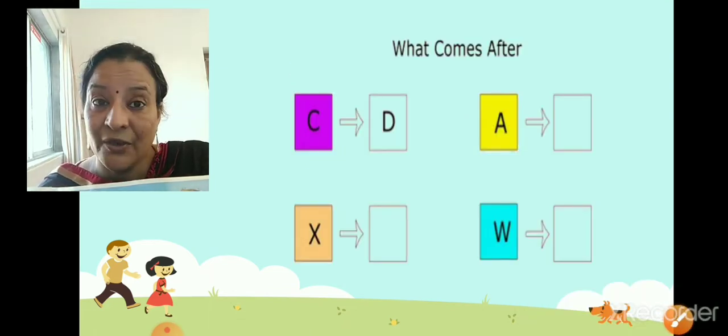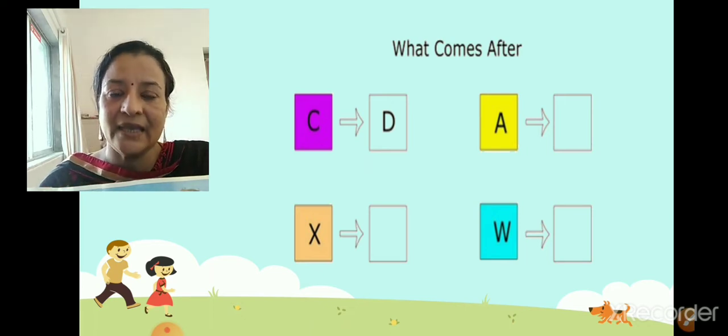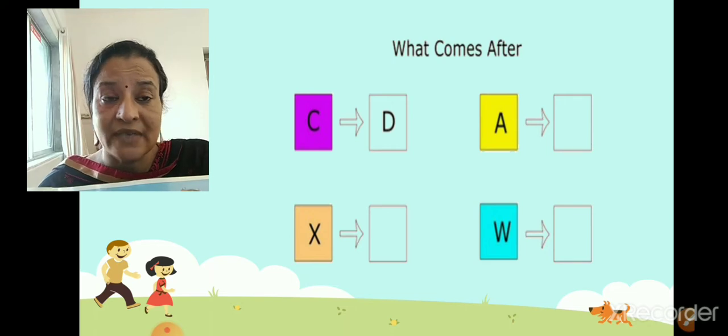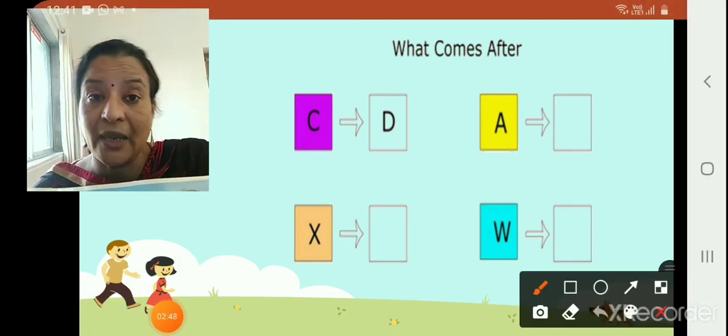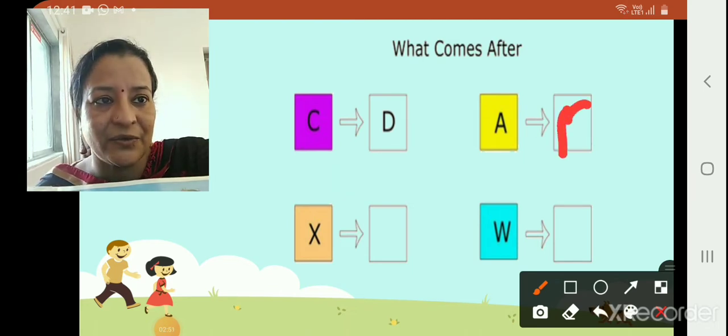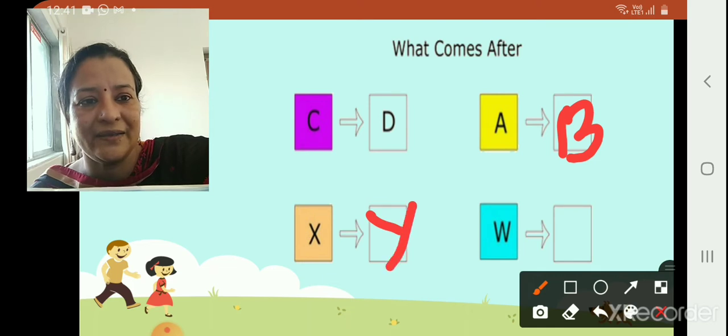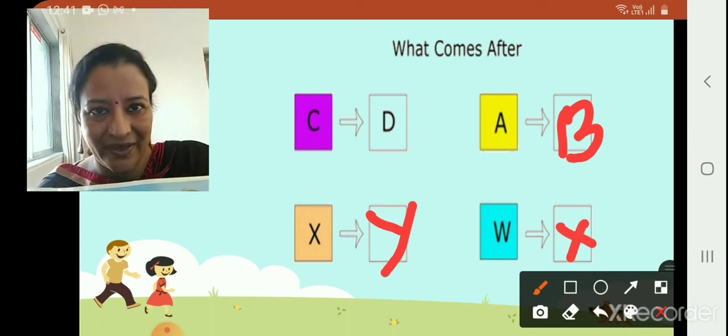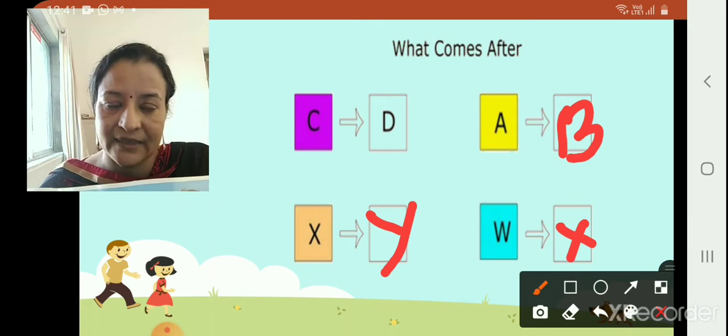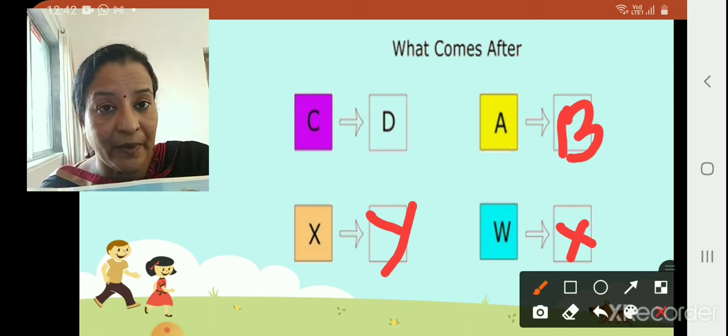Now, you already know your alphabets from A to Z. Here you can see, when we say A, B, C, D, E, F. What comes after C? D. Now, what comes after A, tell me children? A ke baad kya aata hai? B. So we write B here. Now, after X? Y. Correct. And after W? X. So we are moving from left to right. C ke baad. A ke baad. X ke baad. W ke baad. That is after. You remember the word after.